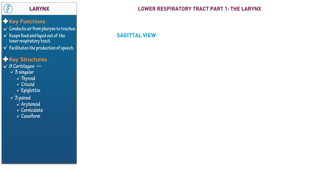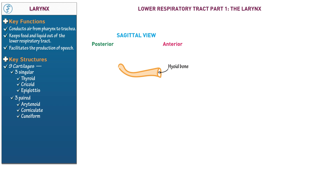Now let's draw the larynx. Begin with a sagittal view and indicate anterior and posterior. First draw the U-shaped hyoid bone, which lies inferior to the mandible and anchors the larynx superiorly. As we draw the larynx, we'll include the three singular cartilages first. Begin with the ring-shaped cricoid cartilage, which forms the base of the larynx — it's the laryngeal foundation.